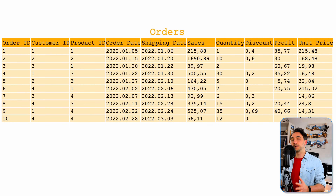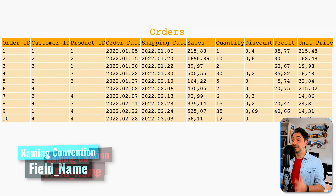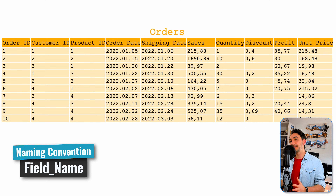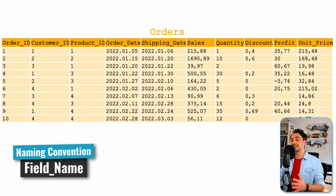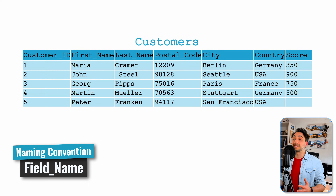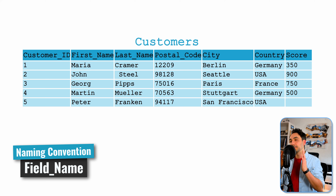Now let's check the naming conventions in our datasets and in Tableau. If you go through the datasets prepared for this course — the small and the big one — you can see I'm always following the same naming convention: words are capitalized and separated with an underscore. For example, in orders we have Product_ID, and in customers we have First_Name, and so on.